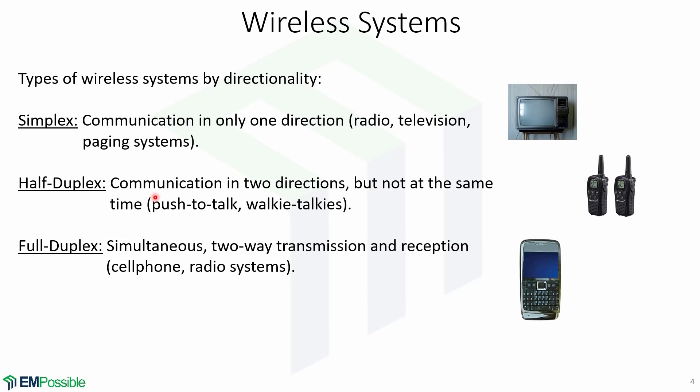A half-duplex system involves communication in two directions, but not at the same time. For example, push-to-talk systems or walkie-talkies. A full-duplex system is a simultaneous two-way transmission and reception communication, like cell phone and radio systems.